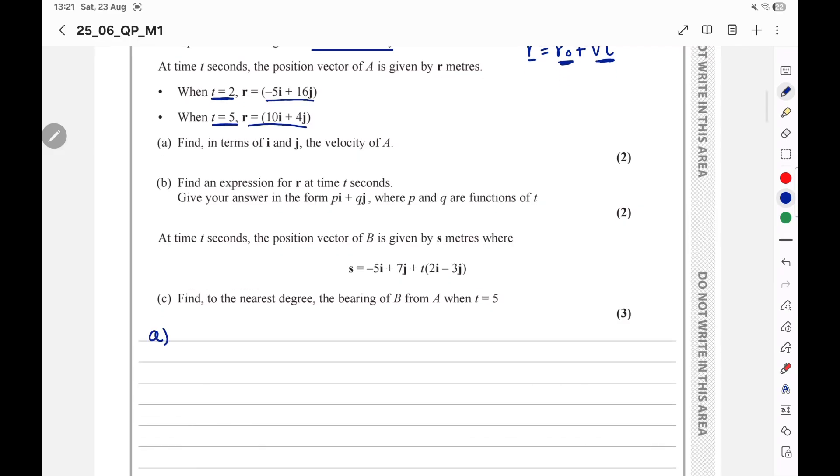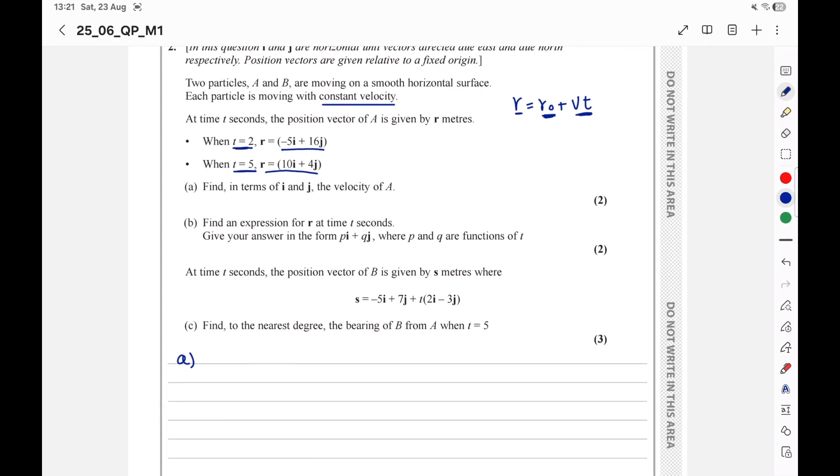Part A, R equal R node plus Vt. We will substitute by 10i plus 4j, 10 and 4, as the final position. Equal R node, the initial position, will be negative 5 and 16. Plus the velocity, multiply time. Time equal how much? Time equal 3. V multiply 3. Why 3? Because the difference between 5 and 2 is 3.